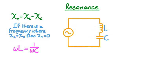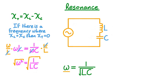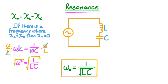To find this special frequency, we start by equating the frequency-dependent formulas for inductive and capacitive reactance. To solve for omega, we multiply both sides by omega over L. The L cancels on the left-hand side, and the omega cancels on the right-hand side, leaving us with omega squared equals 1 divided by LC. Taking the square root of both sides, we get that the resonant angular frequency ω₀ is equal to 1 divided by the square root of the inductance times the capacitance. The phenomenon of inductive and capacitive reactances exactly cancelling at this particular frequency is known as resonance, and ω₀ is called the resonant frequency.